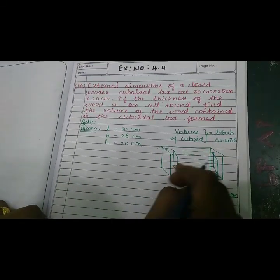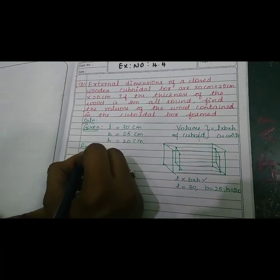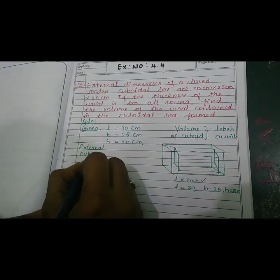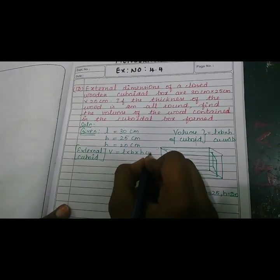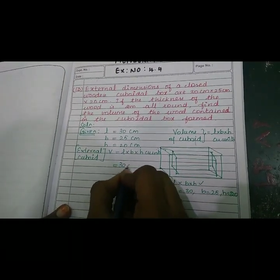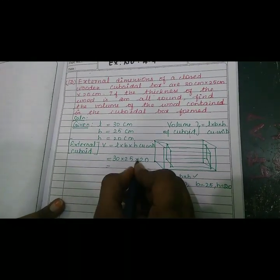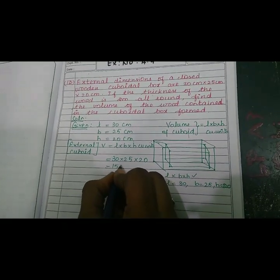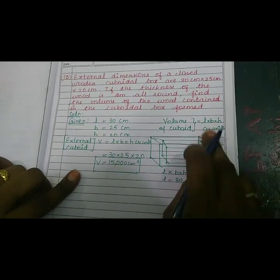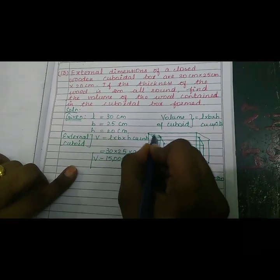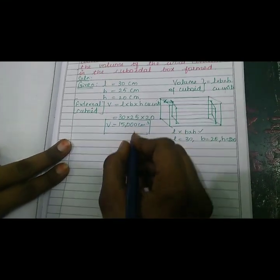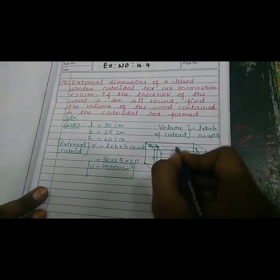Now, we have to find the external cuboid volume. Formula: V is equal to L into B into H cubic units. Applying: 30 × 25 × 20. Multiplying, we get the external cuboid volume.